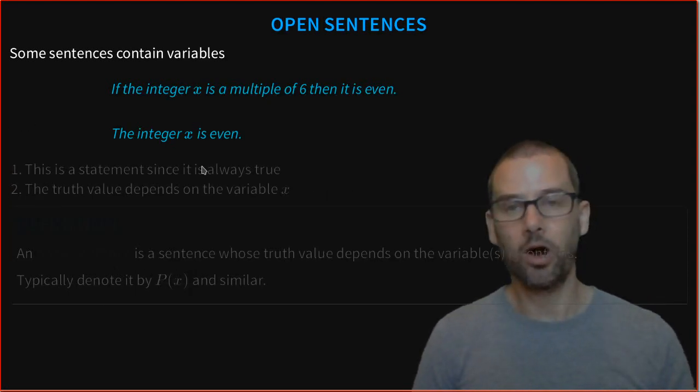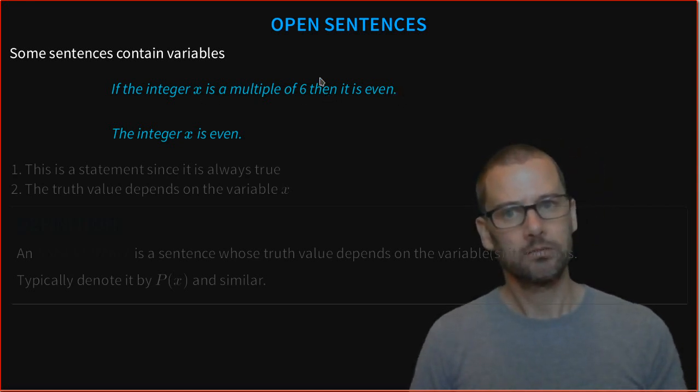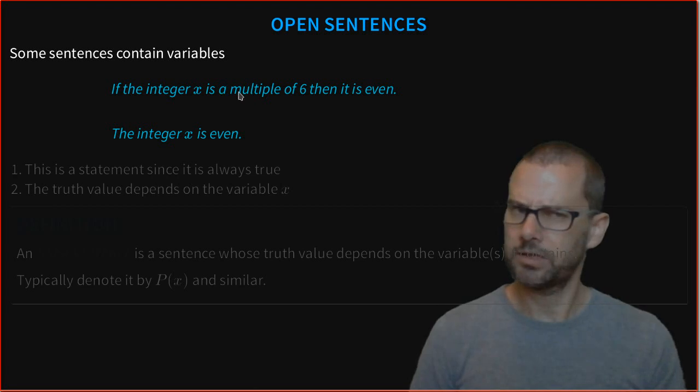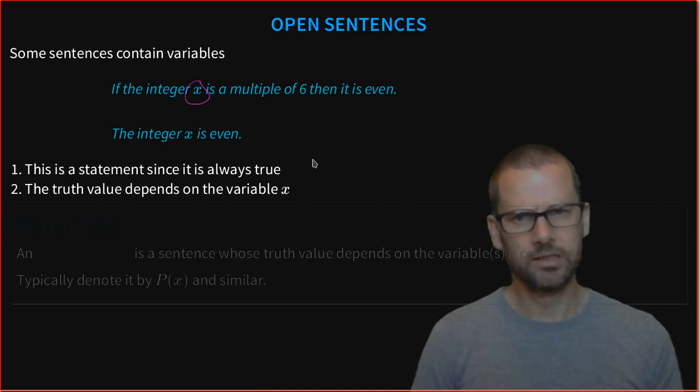Finally, let's look at open sentences. Some sentences contain variables. For example, if the integer x is a multiple of 6, then it is even. And the integer x is even. These are sentences that contain some extra little variable here, x, and we don't know much about x. So we can't necessarily work out if these are true or not.